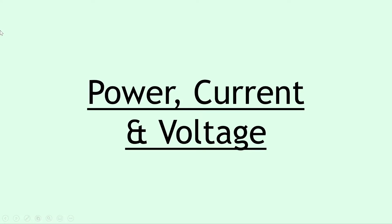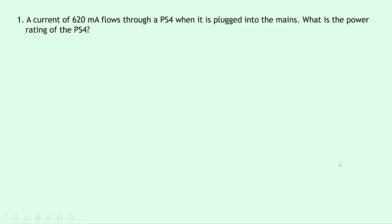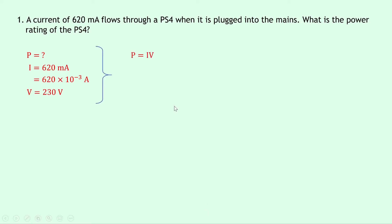The first power relationship we'll look at is the one for power, current, and voltage. We'll do three examples for this. Question one says that a current of 620 milliamps flows through a PS4 when it's plugged into the mains. What is the power rating of the PS4? Writing down what we know: we're trying to find power P, the current I is 620 milliamps, which is 620 × 10⁻³ amps, and the voltage V is 230 volts because it's the mains. Our equation is P = IV, so substituting gives 620 × 10⁻³ × 230, which gives a final answer of 143 watts.